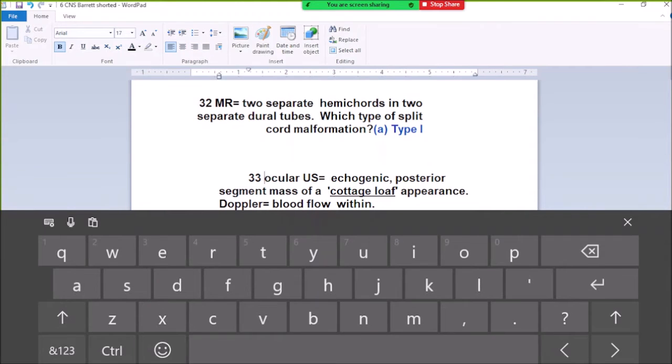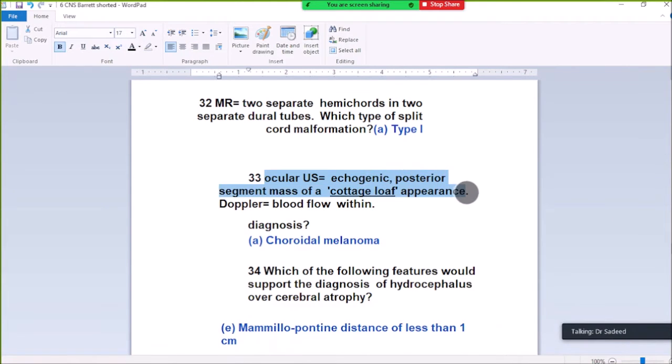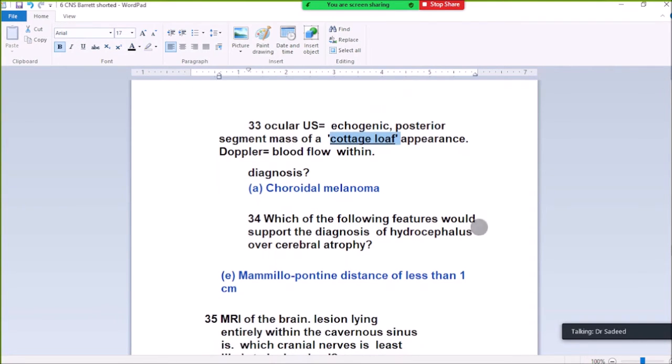Question 33. Ocular ultrasound shows echogenic posterior segment mass of cortex-like appearance, Doppler shows blood flow within it. Diagnosis is choroidal melanoma. Choroidal melanoma can be seen as cortex-like, button-shaped lesion, but the important thing is it has Doppler flow within it and is in the posterior segment of the eyeball, so it is choroidal melanoma.